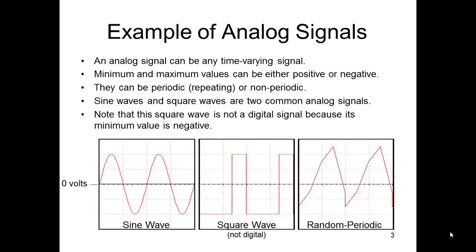This square wave here is not digital because it has negative values. Alright, so that's the thing people sometimes get confused. They say, oh, this is analog, but this isn't.